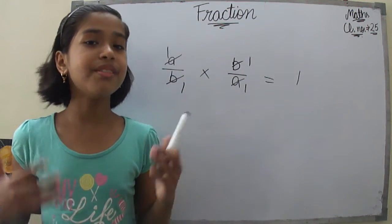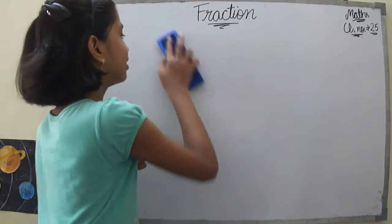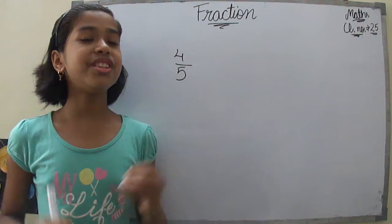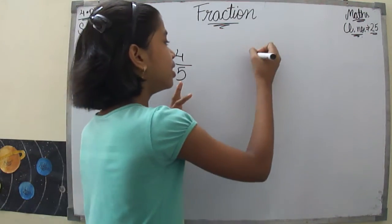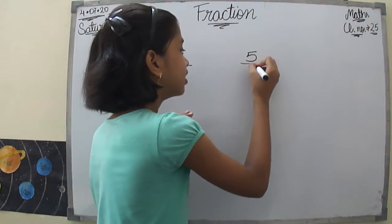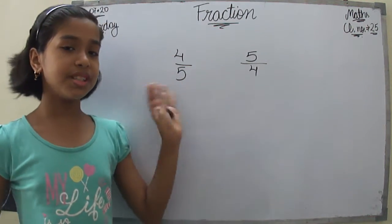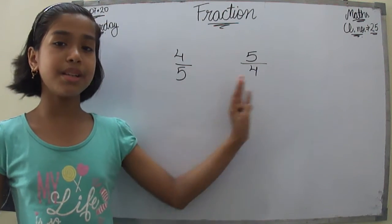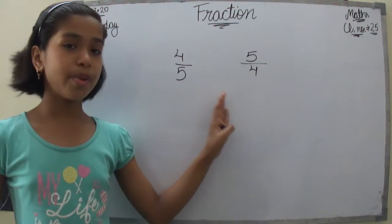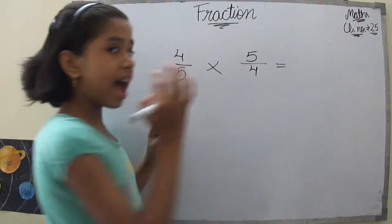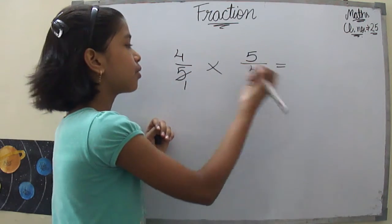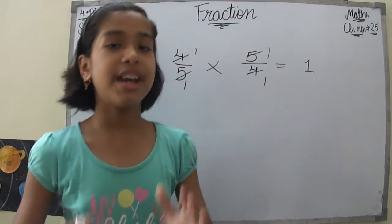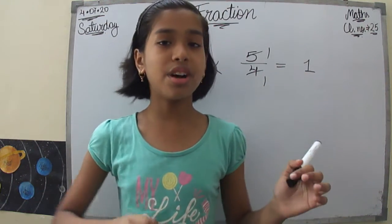Let's put in numbers. Take 4 upon 5. Its reciprocal is 5 upon 4 — the denominator becomes the numerator and the numerator becomes the denominator. Let's check: 4 upon 5 into 5 upon 4. Since 5 goes into 5 one time and 4 goes into 4 one time, the answer is 1. So multiplying any fraction by its reciprocal always gives a product of 1.